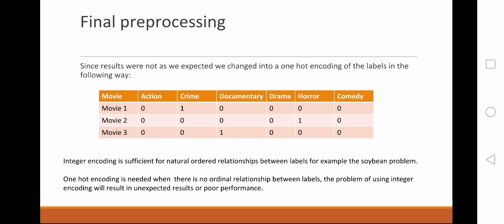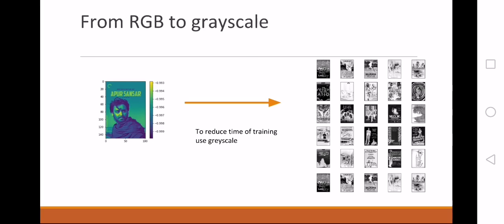After some investigation, we found out that integer encoding is sufficient for natural order relationships, for example, the soybean problem. But in this case, since there are no natural relationships, we needed to use one hot encoding.